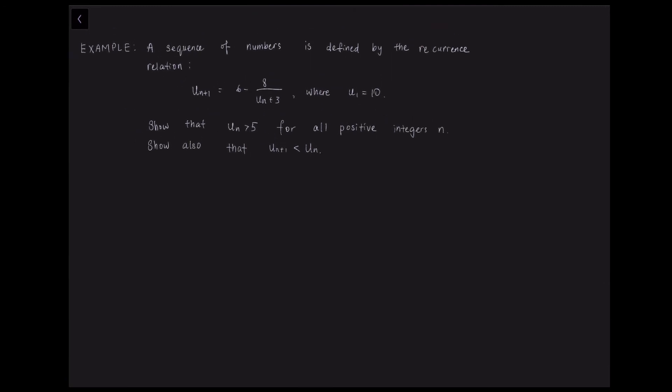Okay, now we are going to look at how to prove a proposition concerning a sequence of numbers defined by a given recurrence relation using proof by induction. So in this example, it wants us to show that un is bigger than 5 for all positive integer n. And it also wants us to show that un plus 1 is less than un.